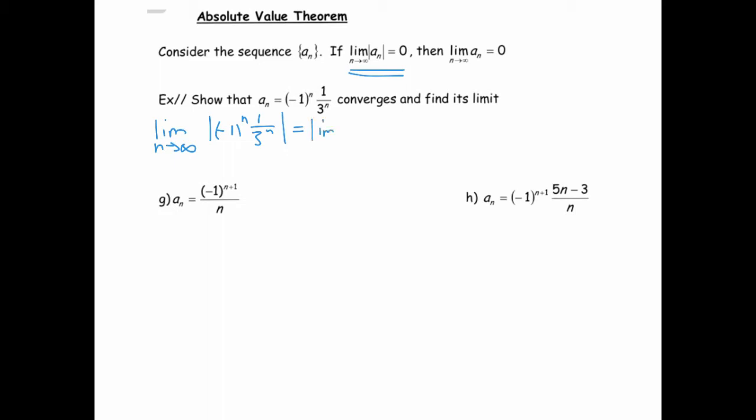So this is just the limit as n goes to infinity of (1/3)^n. And if we think about plugging in large values for n, we can see the denominator gets bigger, so this goes to zero. So that reasoning implies that, therefore, the original goes to zero.